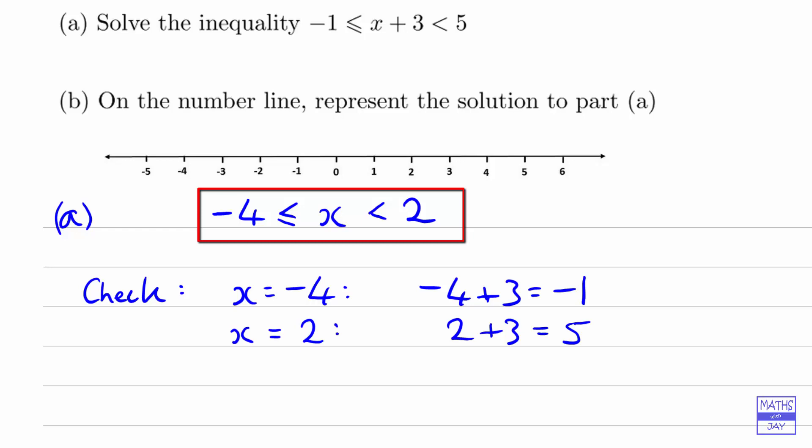And then we want to choose a value in between -4 and 2 and make sure that that does work. So let's choose a nice easy number, 0. And 0+3 is equal to 3, and 3 is greater than -1 and less than 5, so that's fine.